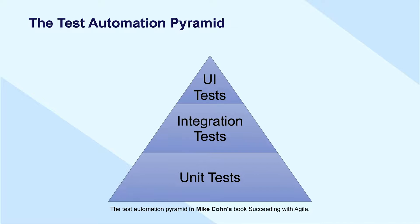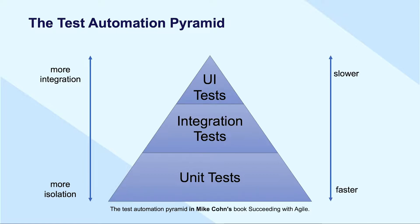The test automation pyramid was first introduced by Mike Kohn in his book Succeeding with Agile. It emphasizes having a large number of tests at the lower level, and the number of tests decreases as development moves to the upper level. In Agile projects, this concept is also referred to as shift left, where defects are eliminated as early as possible in the life cycle.